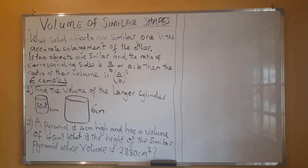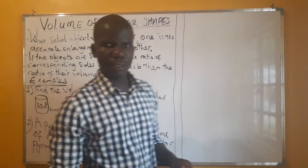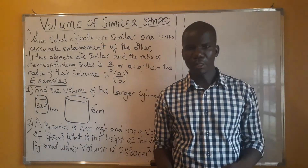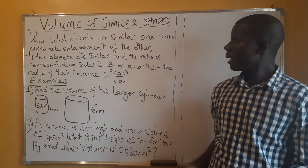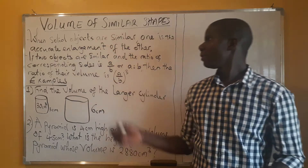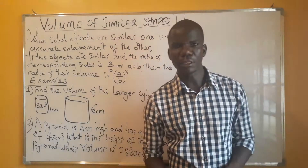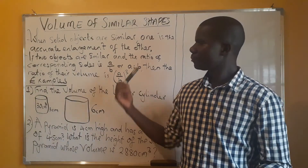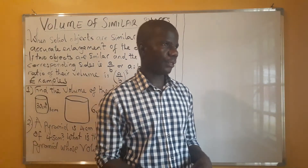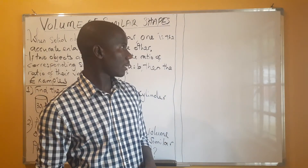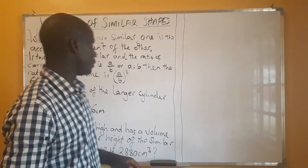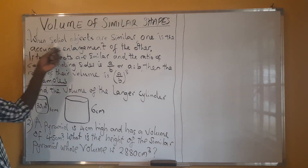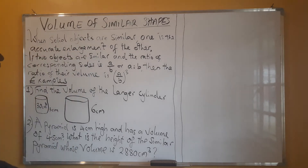Hello, welcome to today's lesson where we're looking at the volume of similar shapes. Similar shapes are those that have equal corresponding angles, and the corresponding sides should have the same proportion. We want to look at what is involved in the volume of similar shapes.